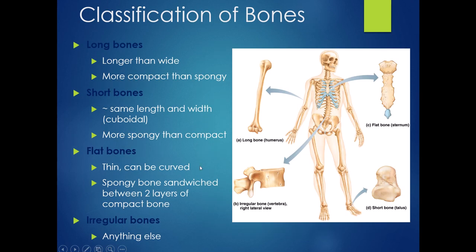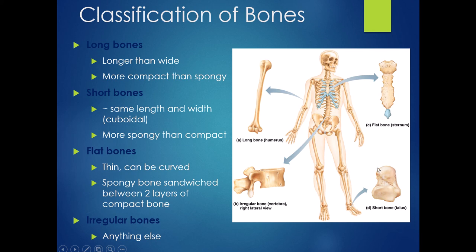We classify bones by shape, which gives us an indication about whether a bone is more compact or spongy. We have four classifications: long bones, irregular bones, flat bones, and short bones. Long bones are longer than they are wide and have more compact bone than spongy bone — most limb bones are long bones. Short bones are more spongy than compact and are roughly as long as they are wide, making them boxy or cuboidal. The wrist and ankle bones are short bones. A special type of short bone is the sesamoid bone, found within joints — the patella is an example.